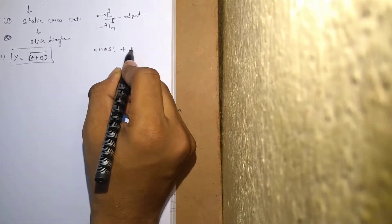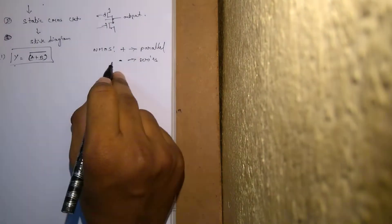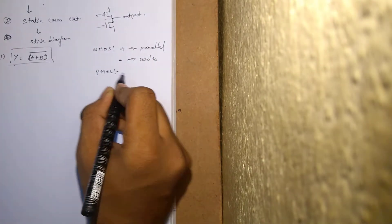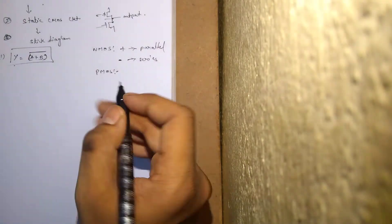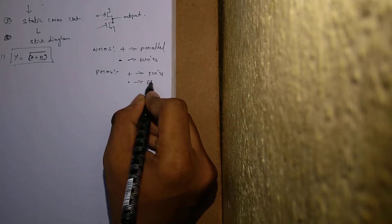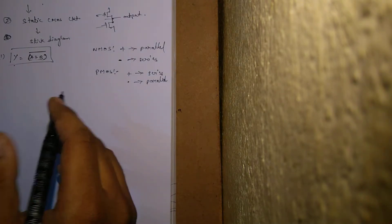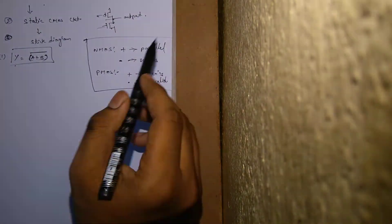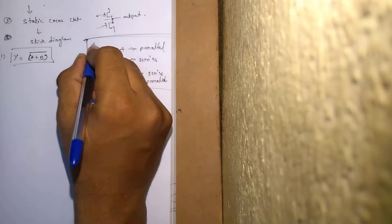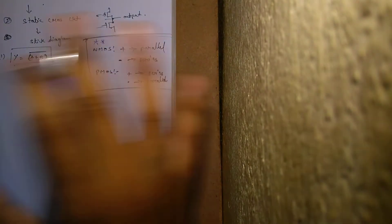For NMOS: plus indicates parallel and dot indicates series — dot is nothing but AND. In case of NMOS, plus means parallel and dot means series. Whereas in case of PMOS, it is vice versa of NMOS — plus means series and dot means parallel. We need to draw the static CMOS circuit based on these points. If you remember these two important points, you can draw a static CMOS circuit for any sort of expression.